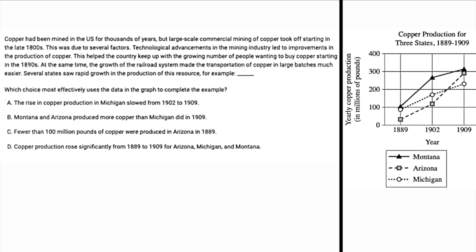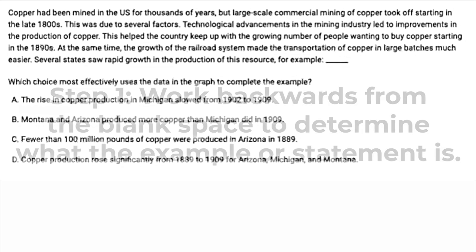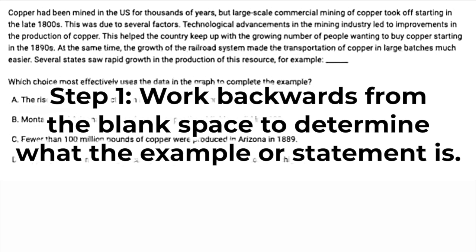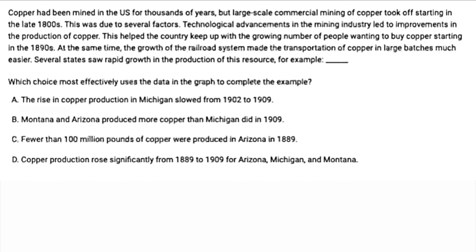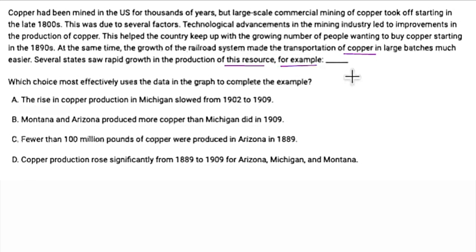With these types of questions, ideally we're not going to have to actually look at the visual aid. So here we see we've got this copper production chart. Hopefully we can get away with not even looking at it. Step one is to work backwards from the blank space to determine what the example or the statement is that you are going to be referring to. In this one, we've got 'several states saw rapid growth in the production of this resource, for example.' I go backwards to the sentence before and we see 'copper.' So I know that I'm trying to support the idea that several states saw a lot of growth in copper.